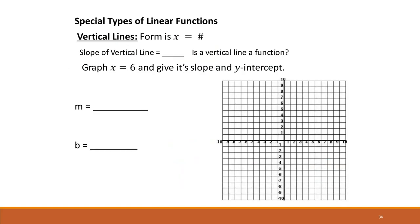For vertical lines, the slope is undefined because division by 0 is undefined — you get a 0 on the bottom of your slope fraction. We have x equals 6; when dealing with vertical lines, we have x equal to a value instead of y equal to a value. Because x equals 6, we draw a vertical line at x equals 6 and we never touch the y-axis, so there is no y-intercept.